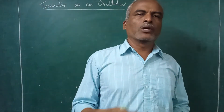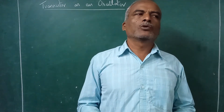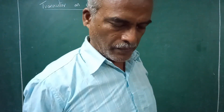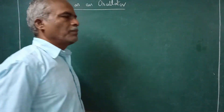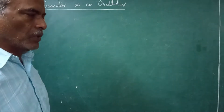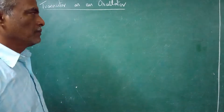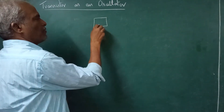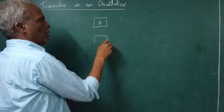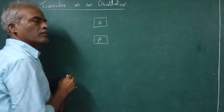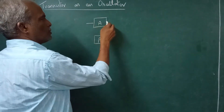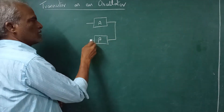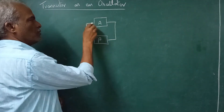Hello viewers, today we are going to see about transistor as an oscillator. The basic components we need for oscillations are an amplifier and a beta network. The output of the amplifier is given to the beta network and once again fed back to the amplifier.